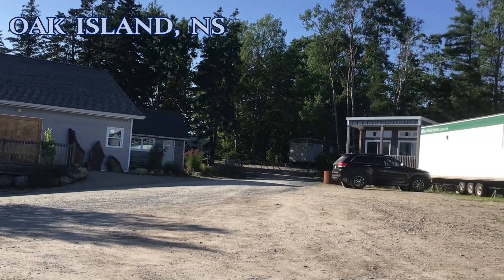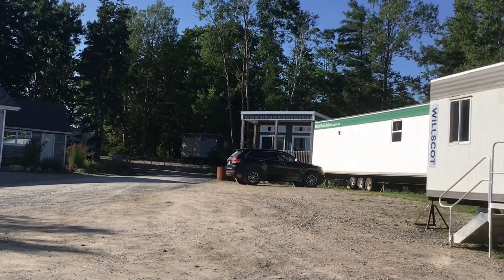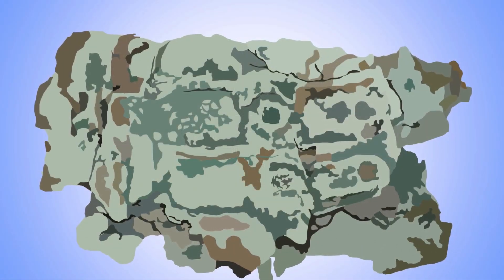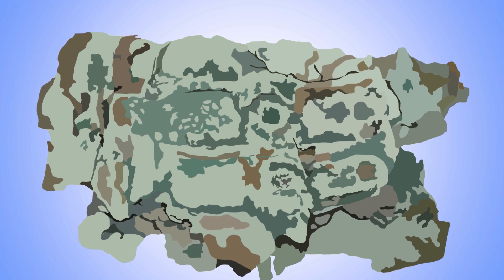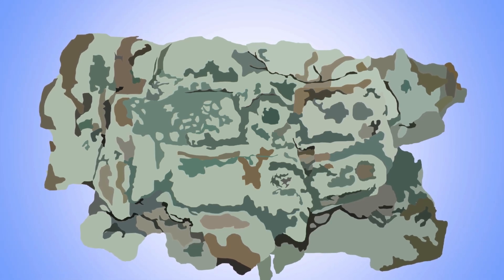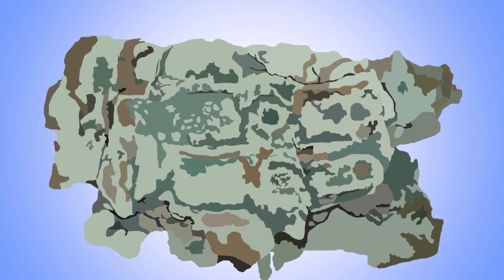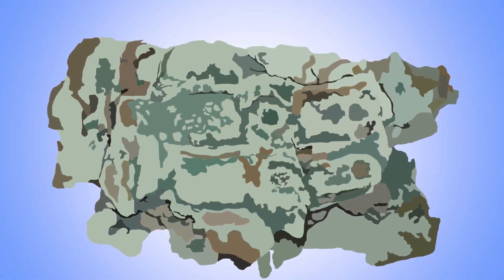Laird examines the copper artifact under a microscope, telling the crew that his initial impression is that the piece is military in nature. Culligan then scans the artifact with an X-ray fluorescence spectrometer and determines that it is composed of 94.5% copper, with very small amounts of zinc and iron, and traces of arsenic and rhodium.